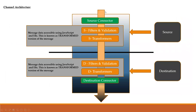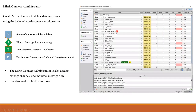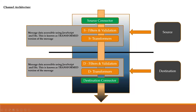Each Mirth Connect channel is divided into two sections: source and destination. When data arrives, it enters the source connector, which then passes it to source filters and transformers. Once those are completed, it moves to the destination side, which has its own filters and transformers. After all destination logic executes, the destination delivers the message to the required endpoint.